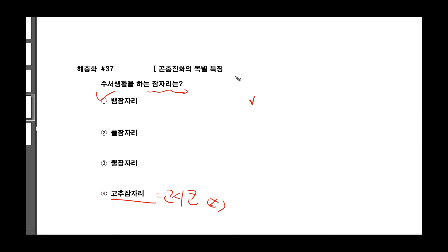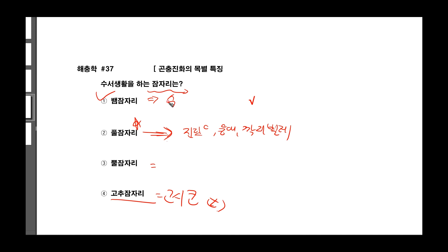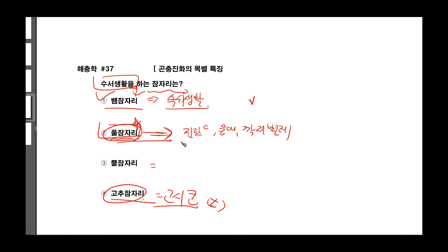풀잠자리와 풀잠자리에 대해서 설명을 해 드릴게요. 풀잠자리 같은 경우는 진딧물하고 응애, 깍지벌레를 잡는 포식성 천적이에요. 따라서 이거는 농업 익충으로써 활용이 될 수 있는 가치가 큰 것이고요. 풀잠자리는 낙엽 속에서 나무 껍질 밑에서 살면서 진딧물을 잡는 종류가 되겠습니다. 그리고 뱀잠자리는 수서 생활을 하는 잠자리고요. 따라서 답은 1번이 되겠습니다.